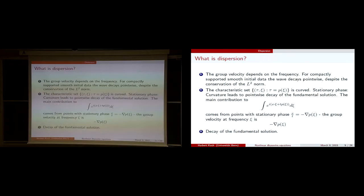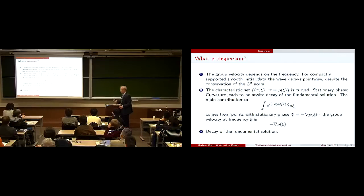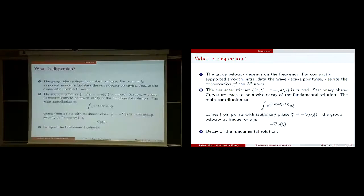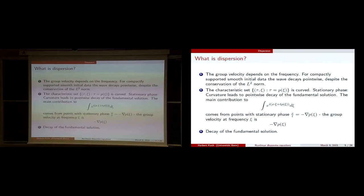A bit more precise: if you look at the characteristic set — taking the Fourier transform of the differential equation — you get a multiplication by tau minus P(xi). The important part is when this vanishes, because otherwise you get more control, similar to elliptic PDEs where much more regularity is available.